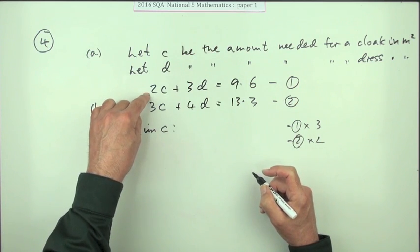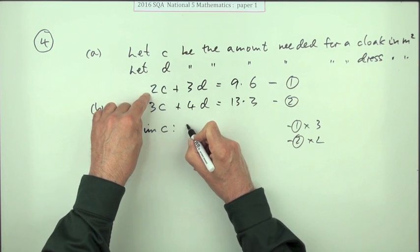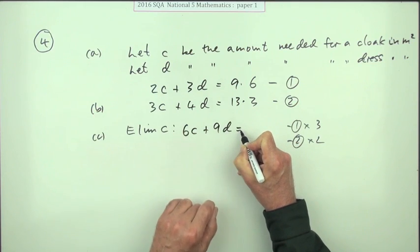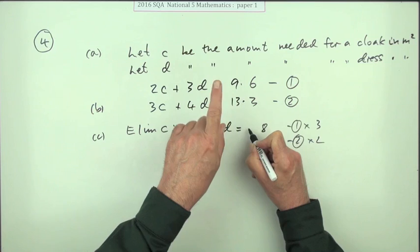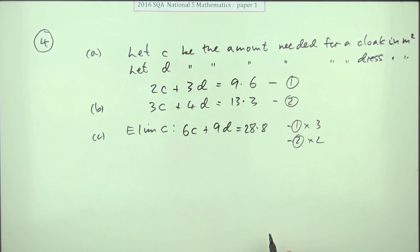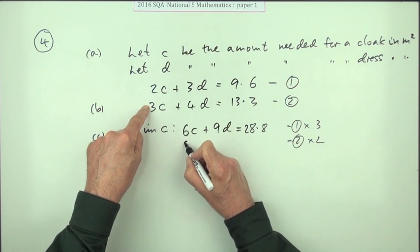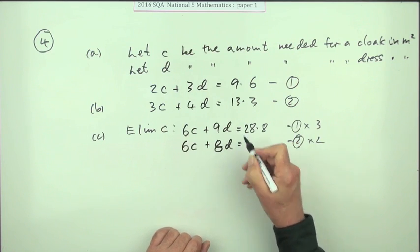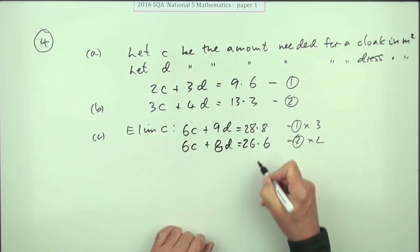So three times the first equation will be 6c plus 9d equals, that'll be 18, carry the one, 28.8. Two times this one: 6c plus, I was about to write four again, 8d equals, and that one's easier, 26.6.